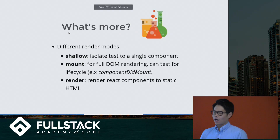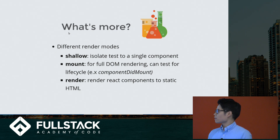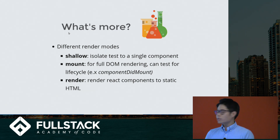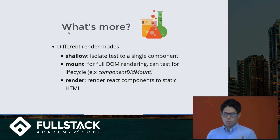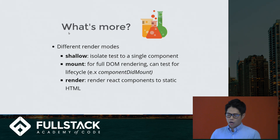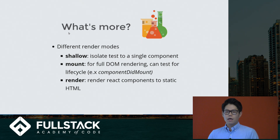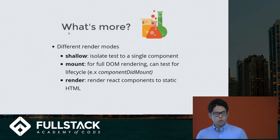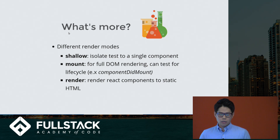Enzyme also provides two other methods: mount and render. Mount is for full DOM rendering, and you can use it to test lifecycle methods like componentDidMount — did it get called? And the render function renders a React component to static HTML. Enzyme's docs suggest starting with shallow to test your React components, but if you need more functionality, look at mount and render.